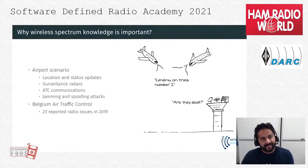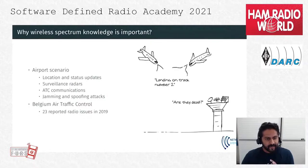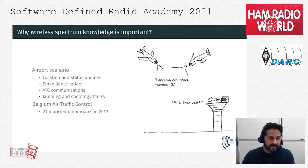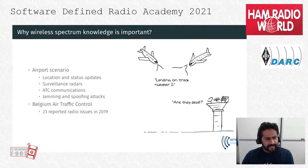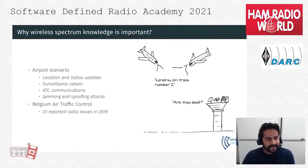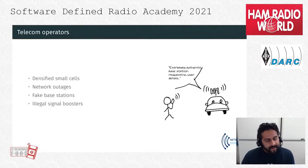Let's start with why wireless spectrum knowledge is important. Consider an airport scenario where location and status are updated through wireless channels — for instance ADS-B messages, surveillance radars, and ATC communication. Jamming and spoofing on these channels is quite common; in Belgium alone in 2019 there were around 23 reported radio interference issues from Belgian air traffic control.